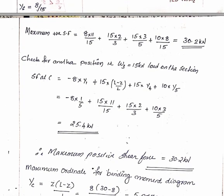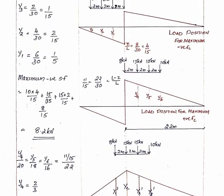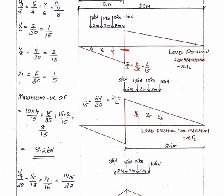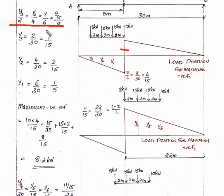The ordinate values are determined from the first lecture. These are called ordinate values: Y1, Y2, Y3, calculated using the similar triangle principle. Y1, Y2, and Y3 are calculated accordingly. Maximum negative shear force equals each load multiplied by its corresponding ordinate value.